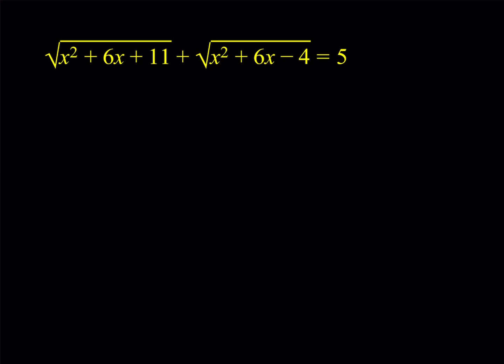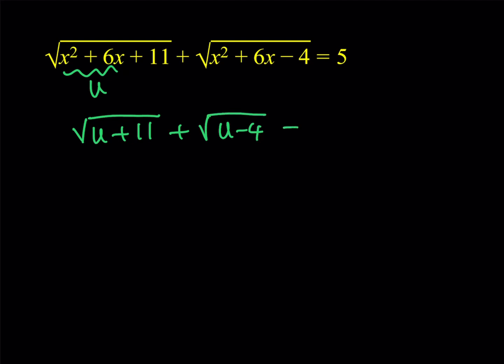There are different ways to do this problem, so I'll show you two methods. Let's get started with the first one. My first method involves some squaring. Before I square, I can use some substitution. I'll call the expression x squared plus 6x equal to u. This gives a slightly simpler equation: the square root of u plus 11 plus the square root of u minus 4 is equal to 5.